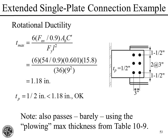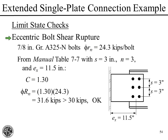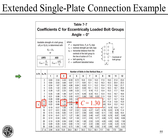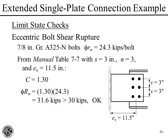Moving to eccentric bolt shear rupture. The strength of one 7/8-inch A325-N bolt is 24.3 kips. Going to Table 7-7 with three-inch horizontal spacing, three-inch vertical spacing, and three bolts per row: with an eccentricity of 11.5 inches (to the centroid of the bolt group), we interpolate and get C = 1.30. The connection strength is 1.30 times 24.3 kips equals 31.6 kips, which exceeds 30 kips—so it's okay, though not by much.